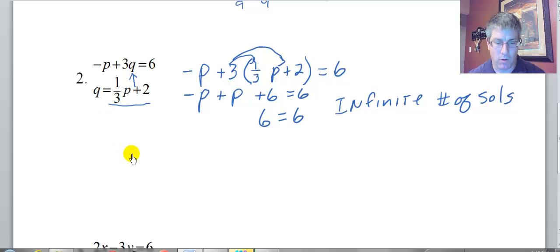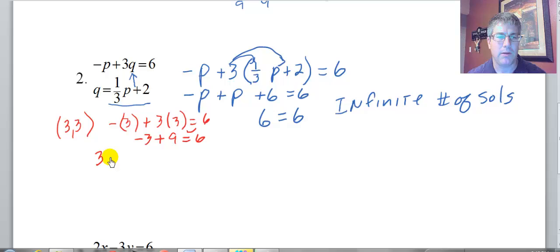Here there's a whole bunch of ordered pairs that work. There's a whole bunch of ordered pairs that don't work as well. A couple ordered pairs that work are like the ordered pair 3, 3 would work. So if I try that, the opposite of 3 plus 3 times 3 equals 6. And sure enough, negative 3 plus 9 is 6. So that ordered pair works in the first one. It should work in the second one. Does 3 equal 1 third of 3 plus 2? Let's try it out. And sure enough, 1 third of 3 is 1, and 1 plus 2 is 3. So the ordered pair 3, 3 works.